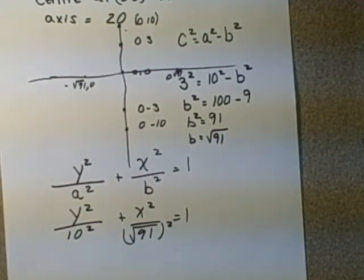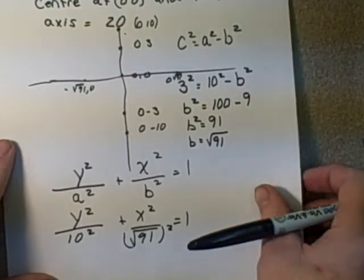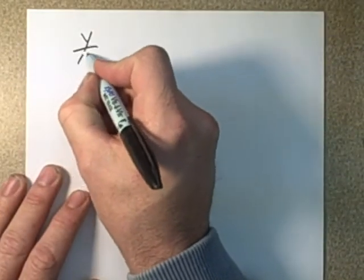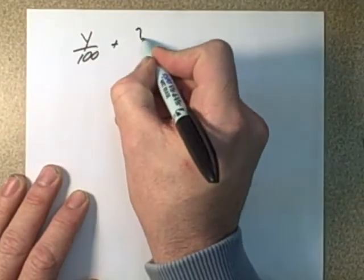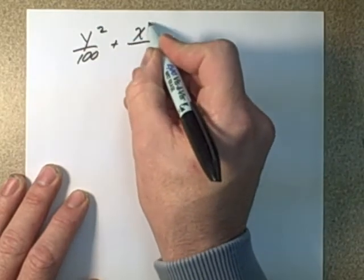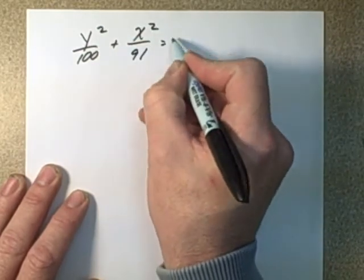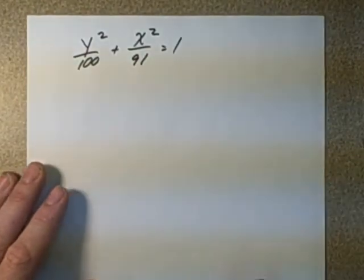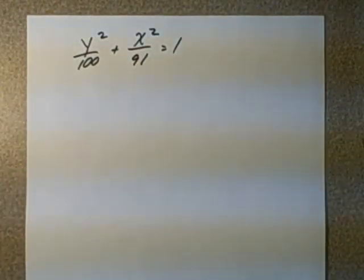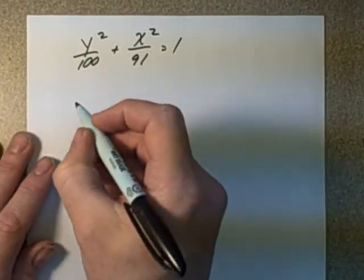So if we work that out, and I'm just going to move this onto a second sheet. If we work that out, we get Y squared over 100 plus X squared over 91 equals 1. So then we have to multiply by a common denominator 9,100 there.